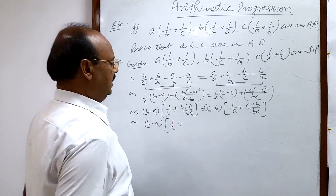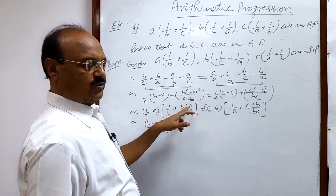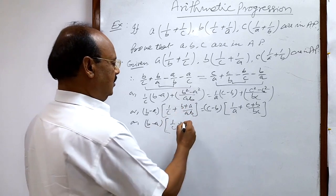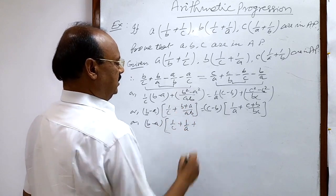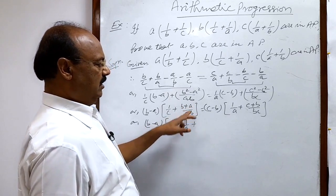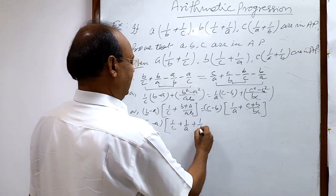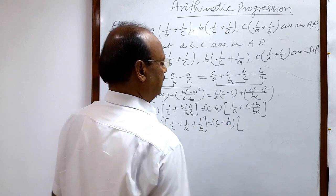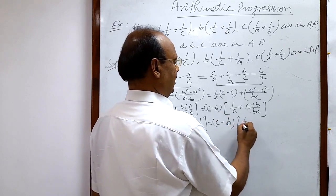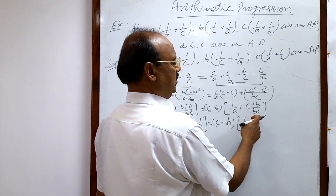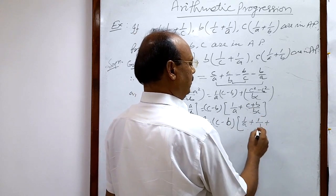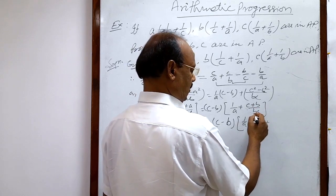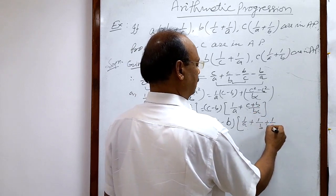Simplifying further: (b + a)/ab — b/ab cancels to 1/a, and a/ab cancels to 1/b. So the bracket becomes 1/c + 1/a + 1/b. Similarly, c/bc cancels to 1/b, and b/bc cancels to 1/c, so the other bracket becomes 1/a + 1/b + 1/c.